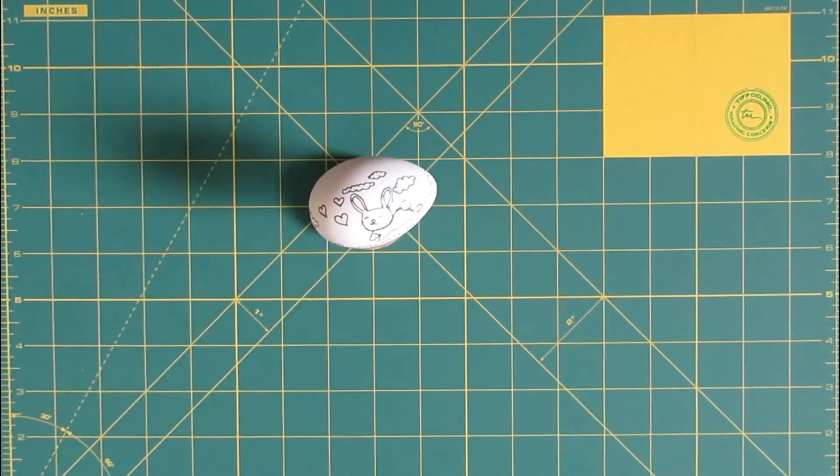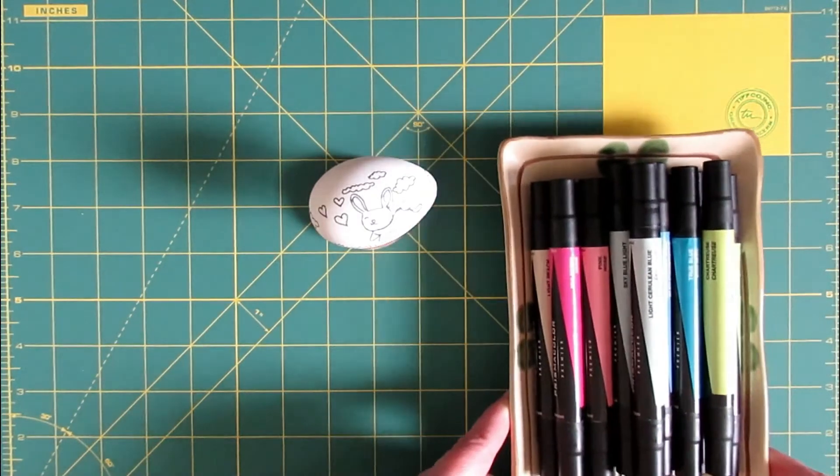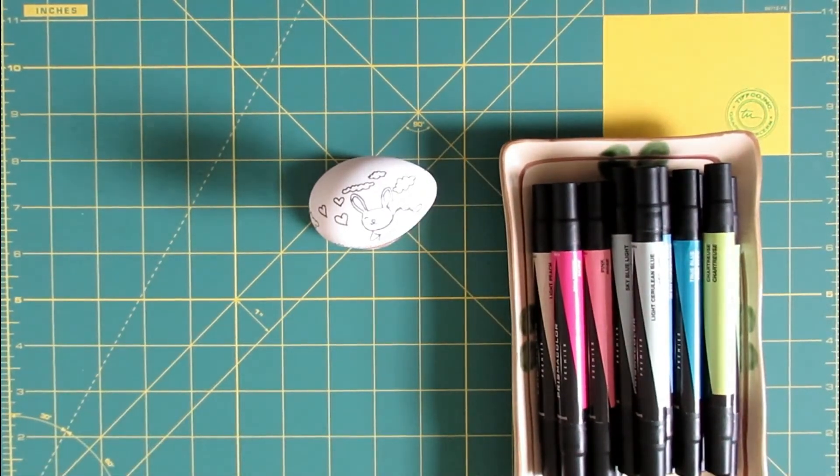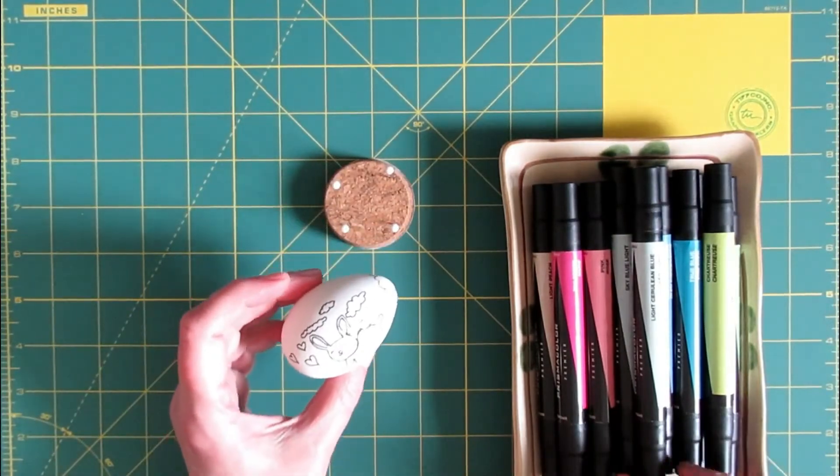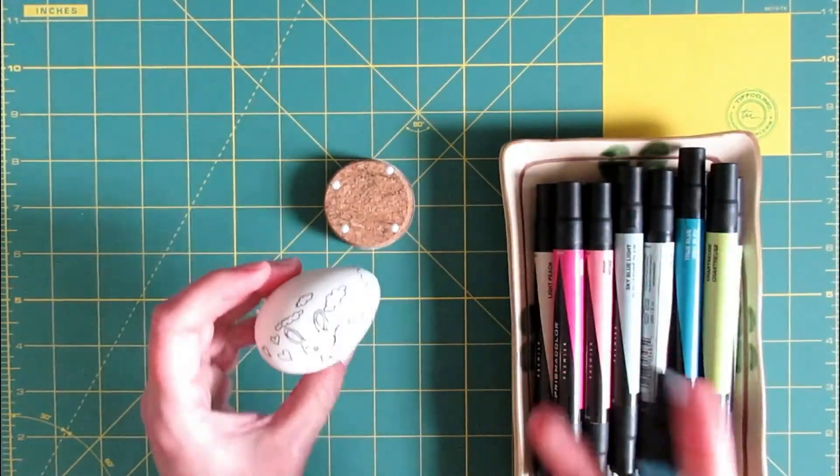Now comes everybody's favorite part, adding the color. At least that's my favorite part. I'm using Prismacolor markers because they're smudge proof and they lay down very vibrant color on these matte plastic eggs.